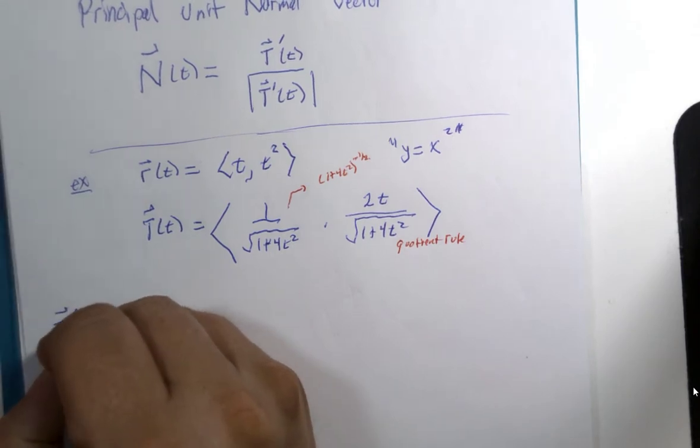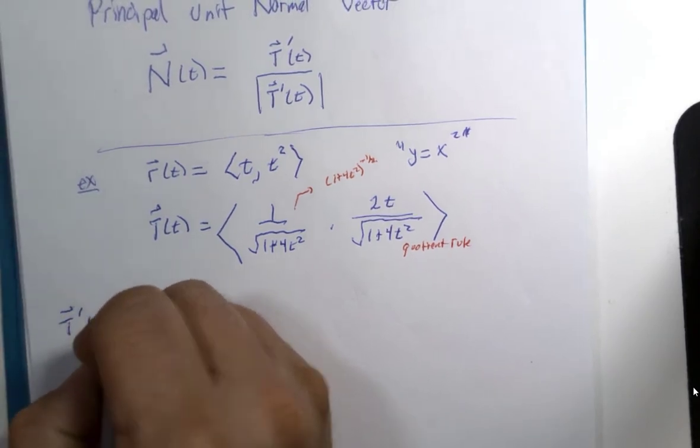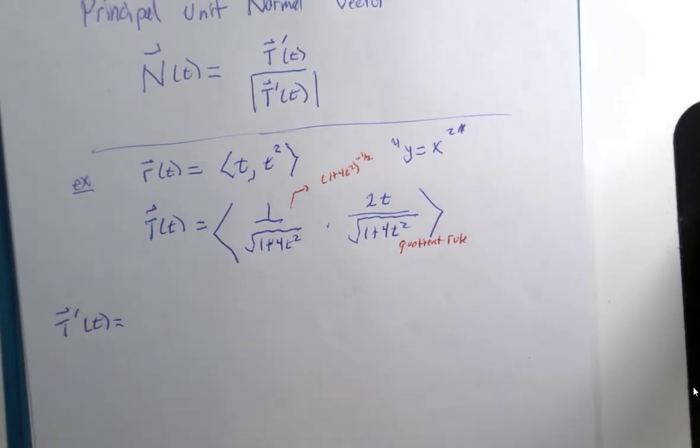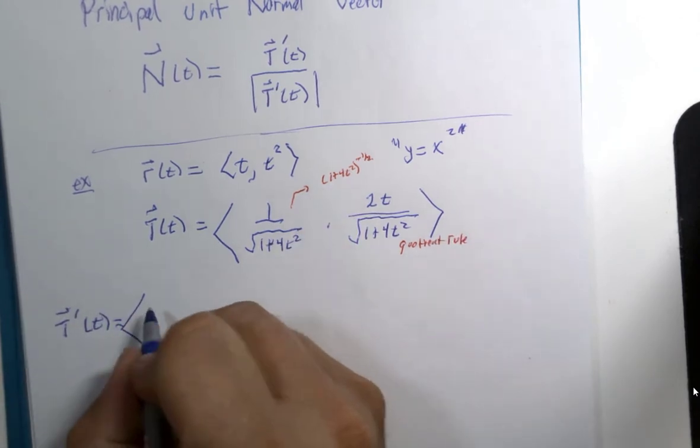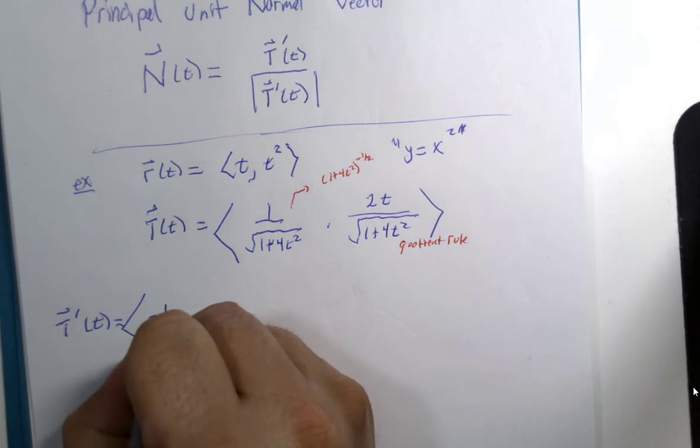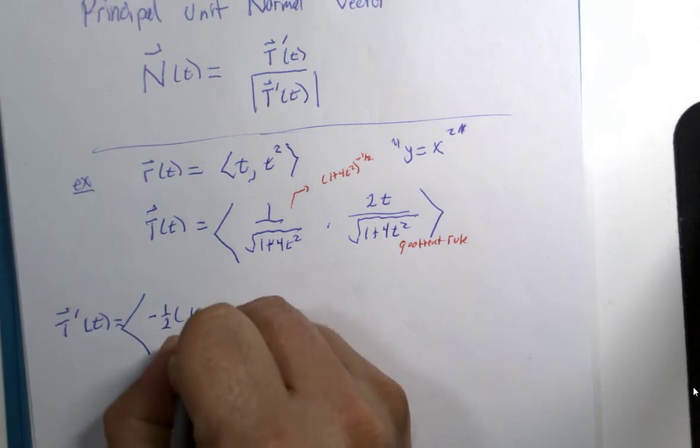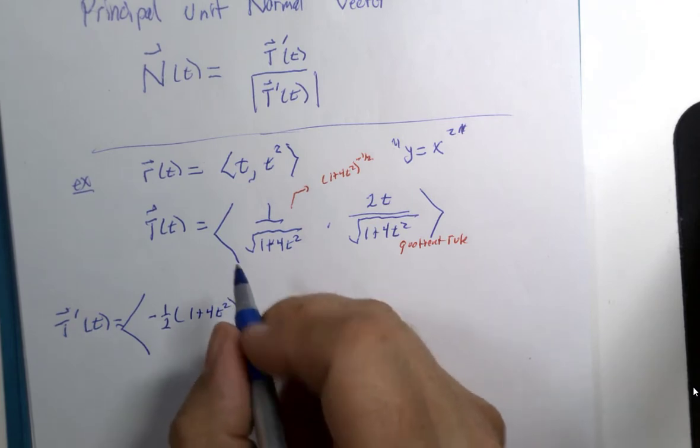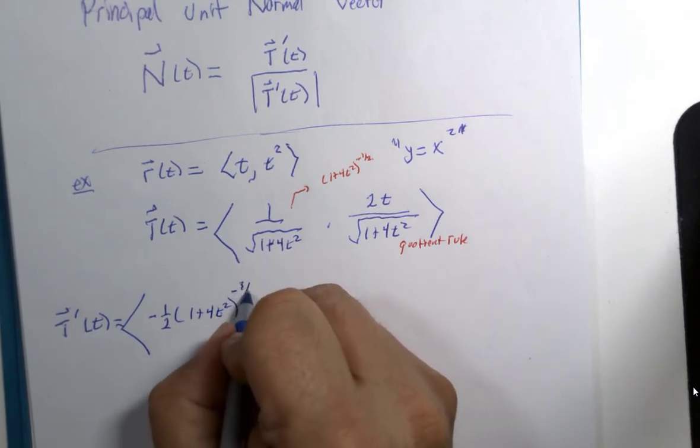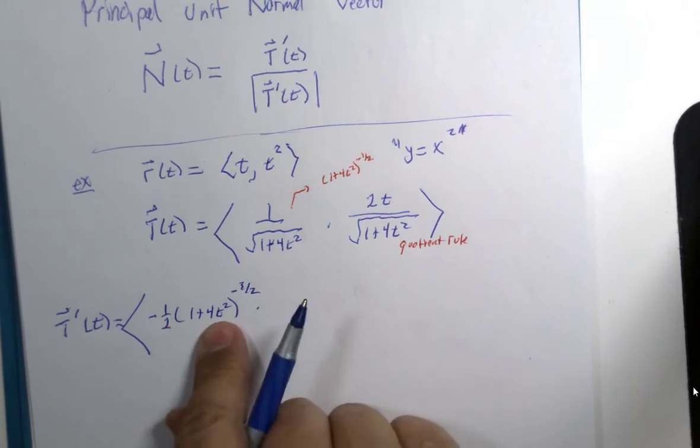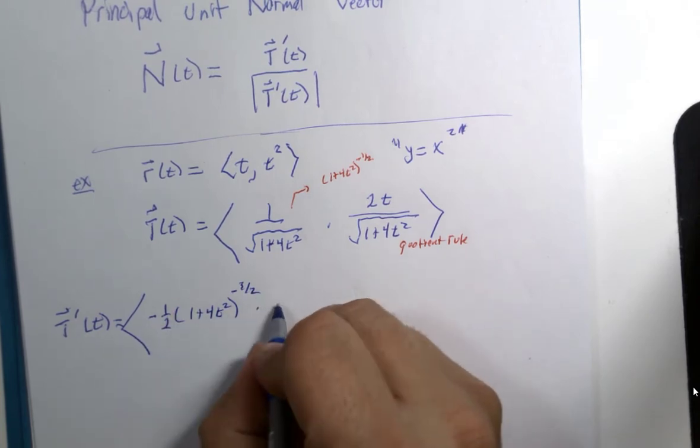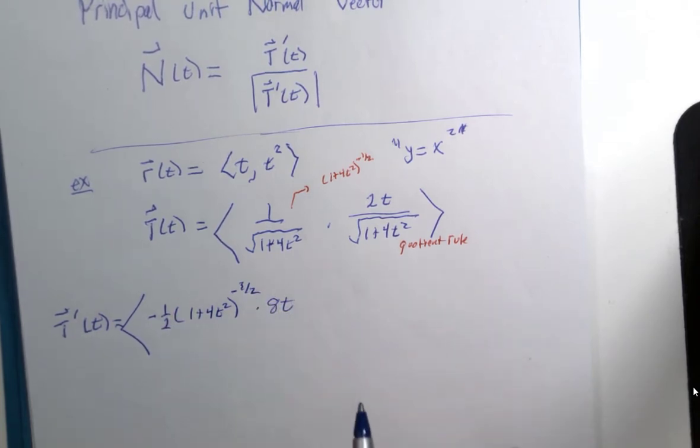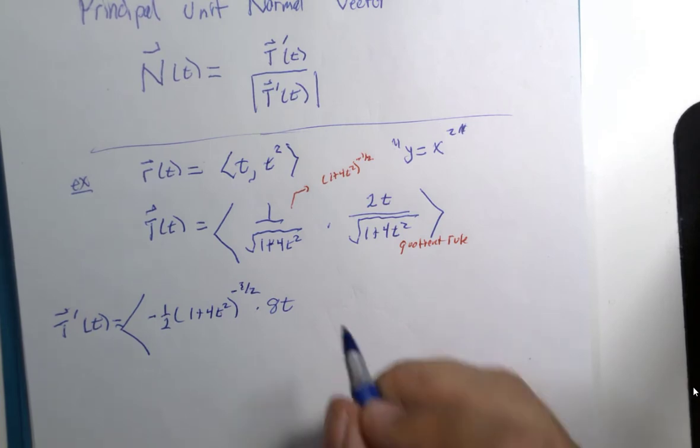Here we go, T prime. So T prime would be then, first derivative, negative one half, 1 plus 4t squared to the minus three halves power times the derivative of 1 plus 4t squared which would be 8t. So that is called the chain rule or sometimes the general power rule.